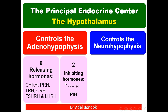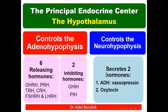The two inhibiting hormones are growth hormone inhibiting hormone and prolactin inhibiting hormone. So growth hormone and prolactin each have both releasing and inhibiting hormones. Regarding the neurohypophysis, the hypothalamus secretes two hormones: antidiuretic hormone (also called vasopressin) and oxytocin.